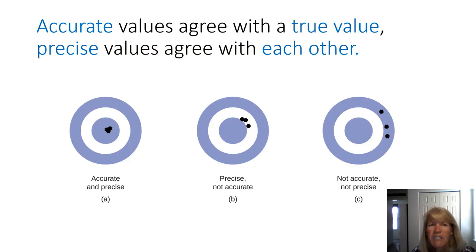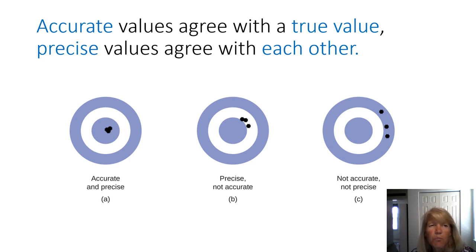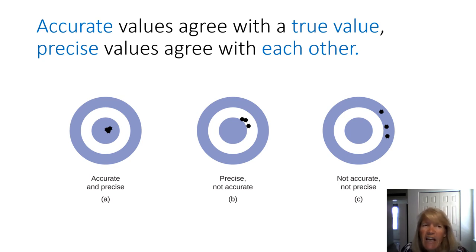We're going to be talking about numbers a lot in chemistry, and one of the important things to recognize is how measurements are different from other types of numbers. One difference is the words accurate and precise — we've used those kind of interchangeably, but with measurements they have a slightly different meaning.